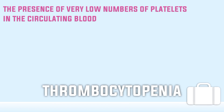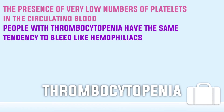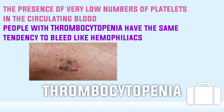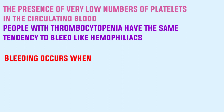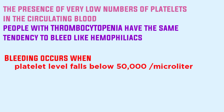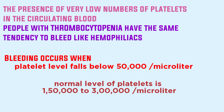Now let's learn about thrombocytopenia. It means the presence of a very low number of platelets in the circulating blood. People with thrombocytopenia have the same tendency to bleed as hemophiliacs, except that the bleeding is from very small venules or capillaries rather than from large vessels as in hemophilia. Ordinarily, bleeding occurs when the platelet level falls below 50,000 per microliter. The normal platelet level is 150,000 to 300,000 per microliter.